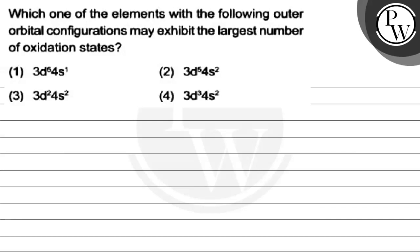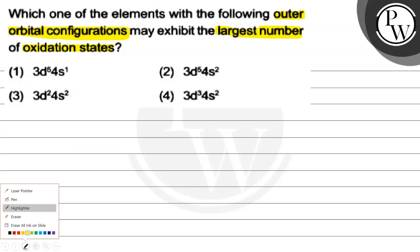Hello everyone, let's read this question: Which one of the elements with the following outer orbital configurations may exhibit the largest number of oxidation states? We have only four options given: 3d⁵4s¹, 3d⁵4s², 3d²4s², and 3d³4s². Let's solve. What will we use as the key concept?